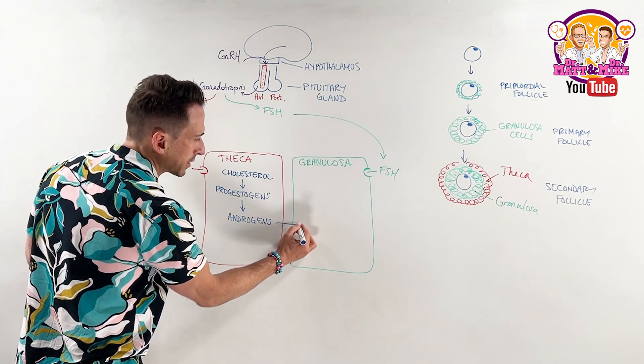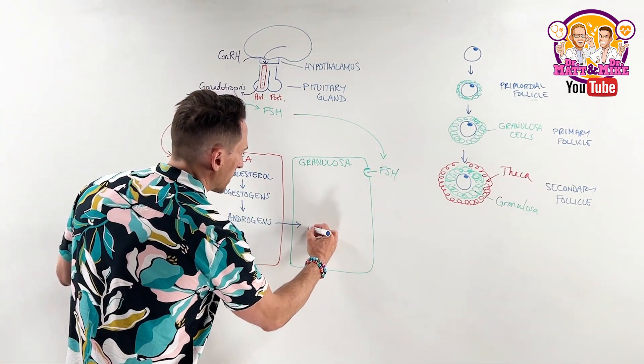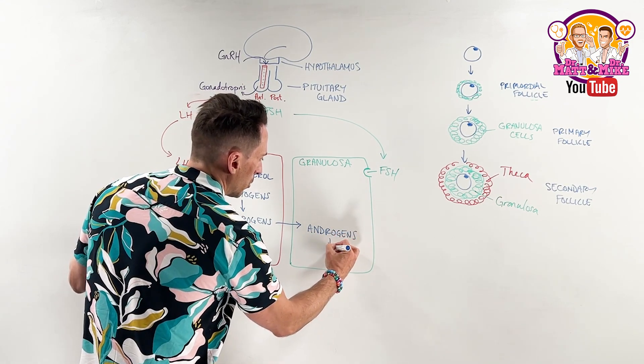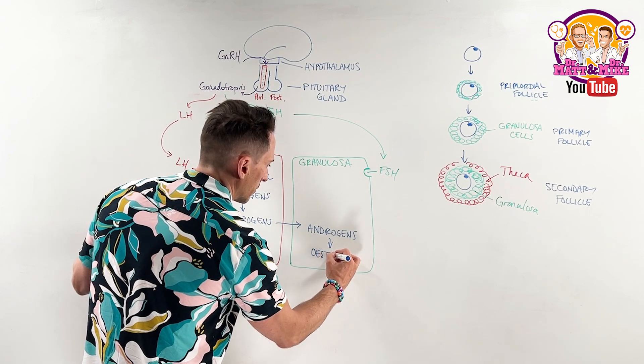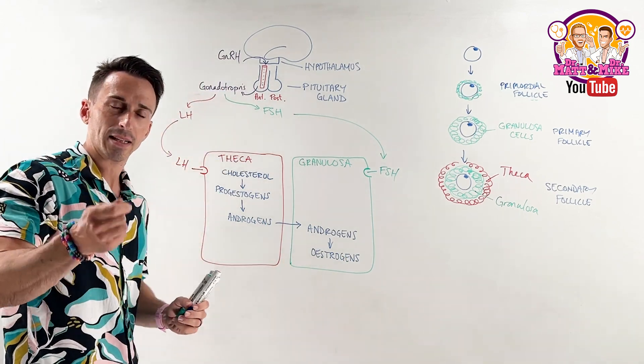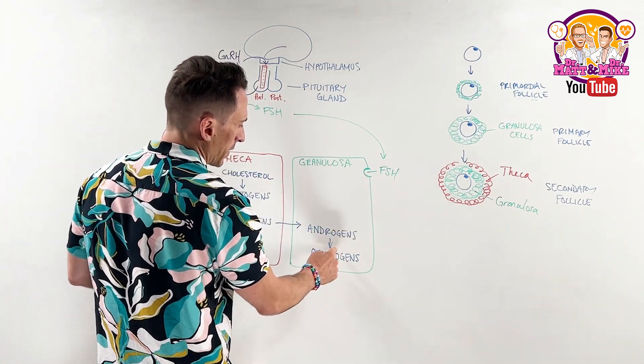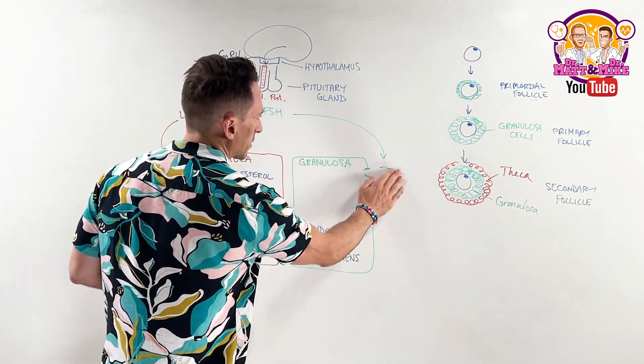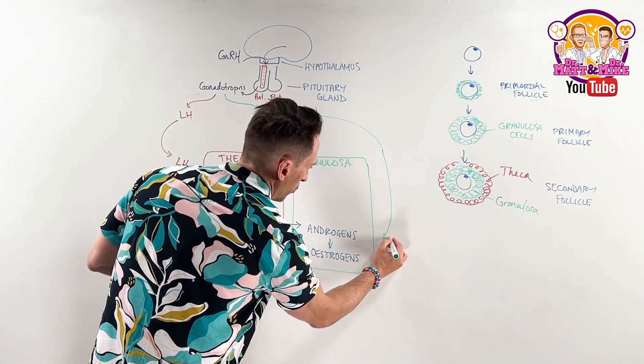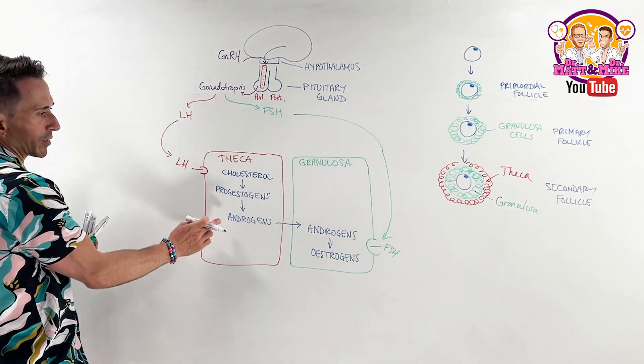So the androgens have to get sent across to the granulosa cells. And what the granulosa cells can do is they can turn androgens, again, like testosterone and DHEA, into estrogens. And remember, ultimately, the estrogen that we are after here is estradiol. That's the important one that is involved in the female reproductive cycle. This happens because of FSH. FSH facilitates that. So I could bring that down and put that arrow there and say that this is facilitated because of FSH.